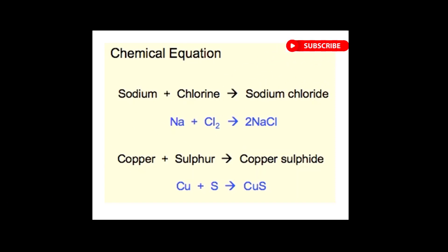For example, sodium plus chlorine gives us the product sodium chloride: 2Na plus Cl2 yields 2NaCl.